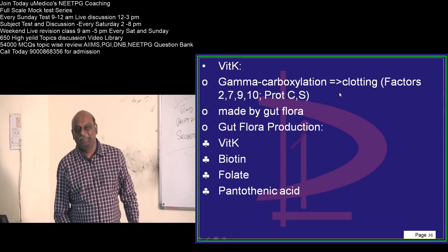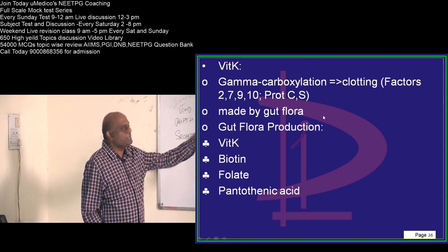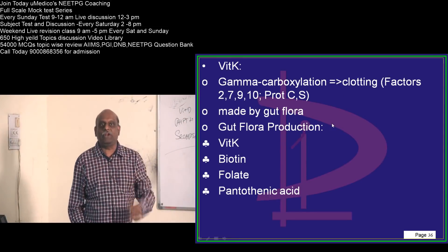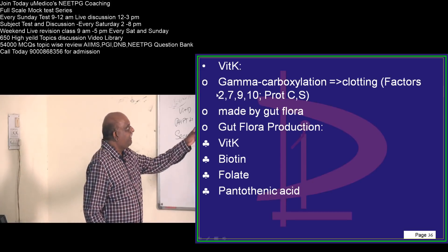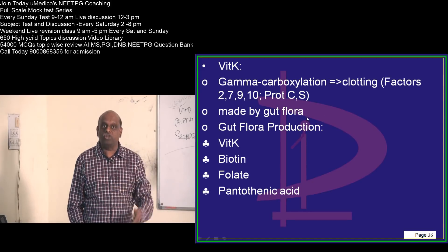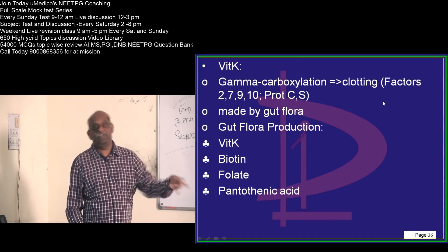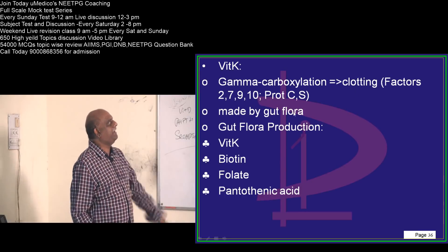What is the paradox? Protein C and Protein S are antithrombotic, whereas factors 2, 7, 9, 10 are prothrombotic. Both of them are dependent on vitamin K.